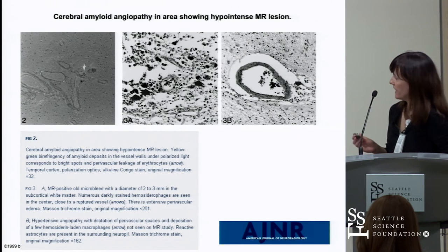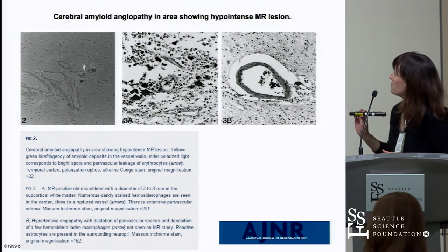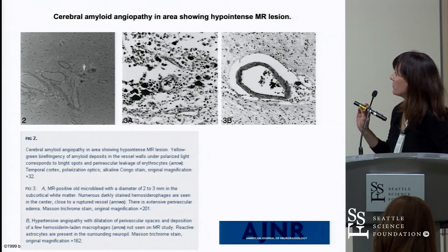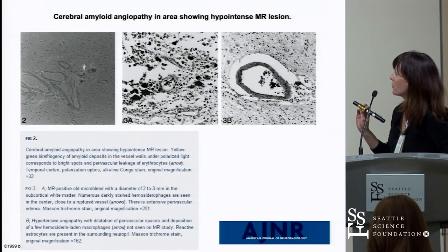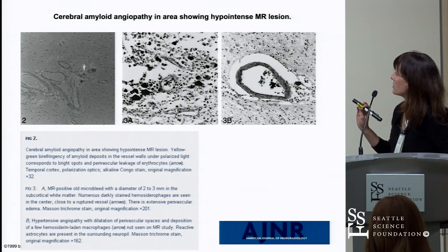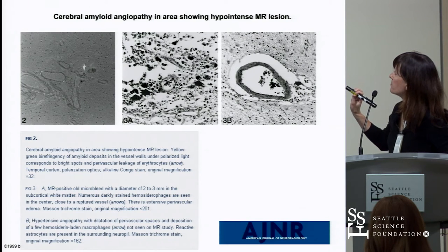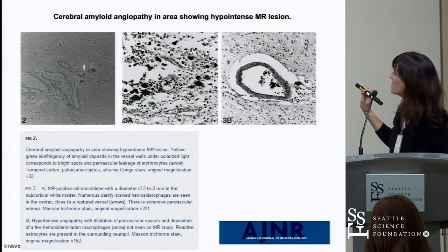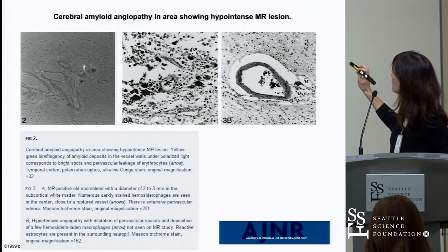These slides from the initial Fazekas study show: in figure two, positive yellow-green birefringence for amyloid angiopathy; in the middle, an MR-positive microbleed with areas staining for hemosiderin — hemosiderin-laden macrophages; and on the right, dilation of perivascular spaces with a few hemosiderin-laden macrophages in a vessel showing hypertensive angiopathy.